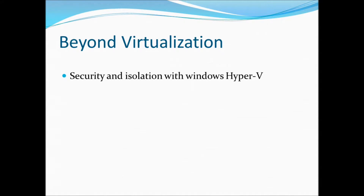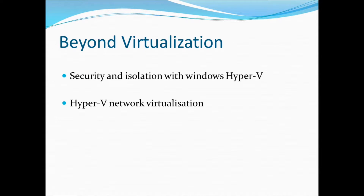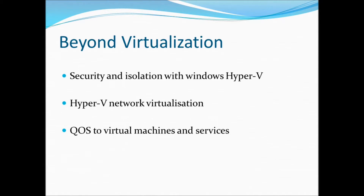Beyond virtualisation. With Windows Server 2012, you can configure servers running Hyper-V to enforce network isolation among any set of arbitrary isolation groups, which are typically defined for individual customers or sets of workloads. Scale beyond VLANs with Hyper-V network virtualisation. With this feature, you can isolate network traffic from different business units or customers on a shared infrastructure without using VLANs. Hyper-V network virtualisation also lets you move virtual machines as needed within your virtual infrastructure while preserving their virtual network assignments. Windows Server 2012 expands on the quality of service by introducing the ability to guarantee a minimum bandwidth to virtual machines or services.